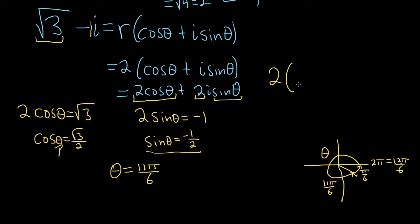So the final answer is going to be r, which we said was 2, parentheses, cosine of, we said, 11 pi over 6, plus i sine 11 pi over 6.